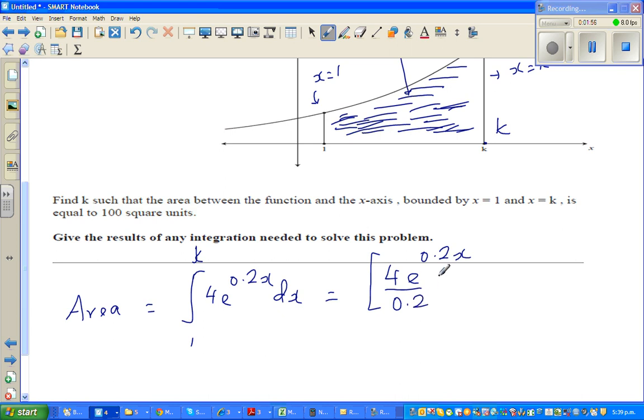In differentiation, you would have multiplied by 0.2. If you were differentiating this function, you would have gone 4 times 0.2 times e to the power 0.2x. So integration is the opposite of differentiation, so you divide. So this is from 1 to k equals 100.